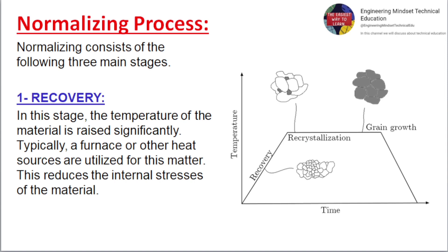Normalizing consists of the following three main stages. One: Recovery. In this stage, the temperature of the material is raised significantly. Typically, a furnace or other heat sources are utilized for this matter. This reduces the internal stresses of the material.